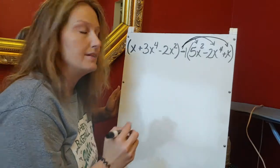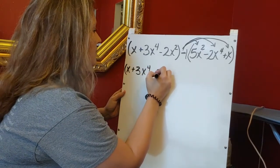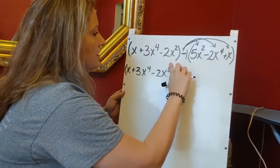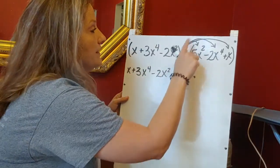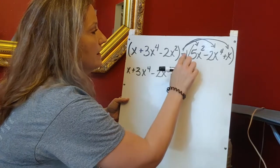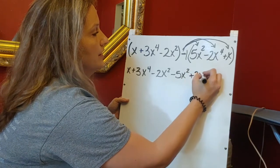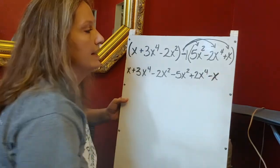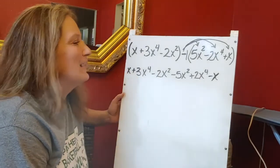So I've got x plus three x to the fourth, minus two x-squared in the first set of parentheses. I'm going to distribute the negative one through the second parentheses. Negative one times five x-squared gives me negative five x-squared. Negative one times negative two x to the fourth makes that a positive two x to the fourth. And negative one times positive x makes that a negative x.